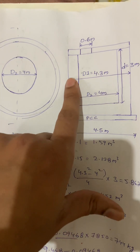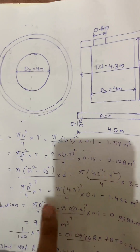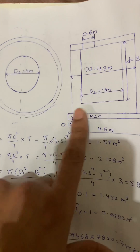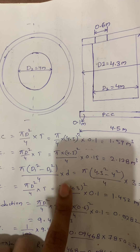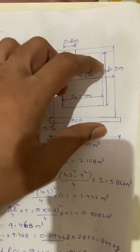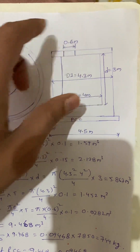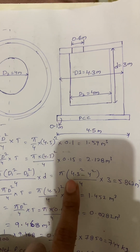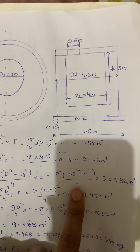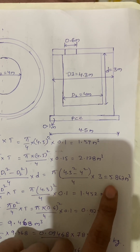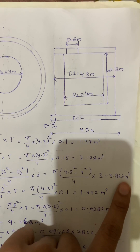Next I am considering the hollow portion. The RCC formula is π × (D1² − D2²) / 4 × D, where D1 is the outer diameter and D2 is the inner diameter, and D is the depth of the tank — 3 meters. So π × (4.3² − 4²) / 4 × 3. I got 5.867 meter cube.